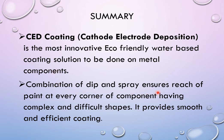It is a combination of DIP and spray: we use the CED main tank for the dip process and spray for rinsing. Paint can reach every corner, even on components having complex and difficult shapes. It provides very smooth and efficient coating without defects. It is a very automatic process, and with the system you can easily find issues by monitoring parameters like CED temperature, solids, electrical conductivity, voltage, and tank water level.